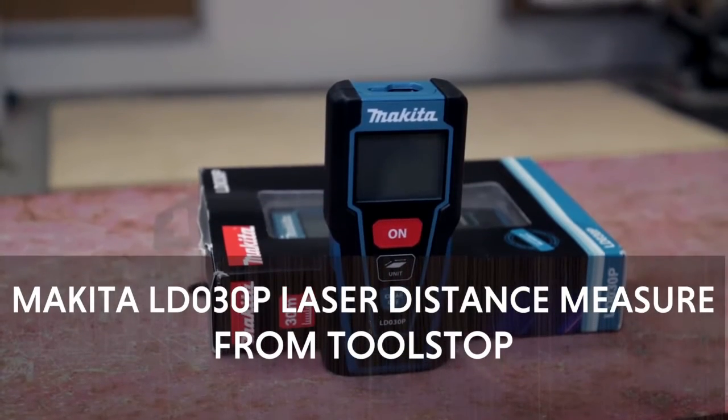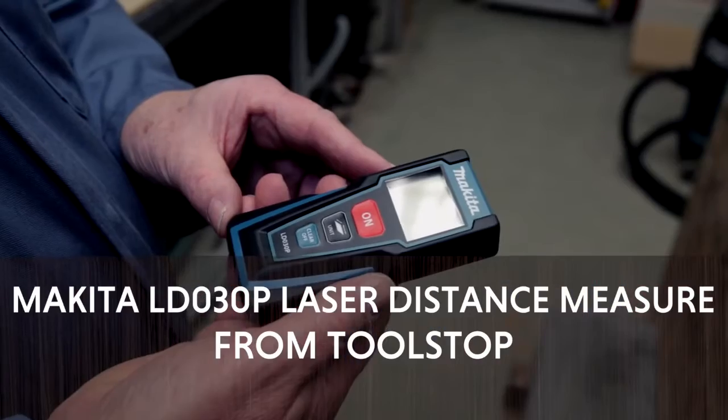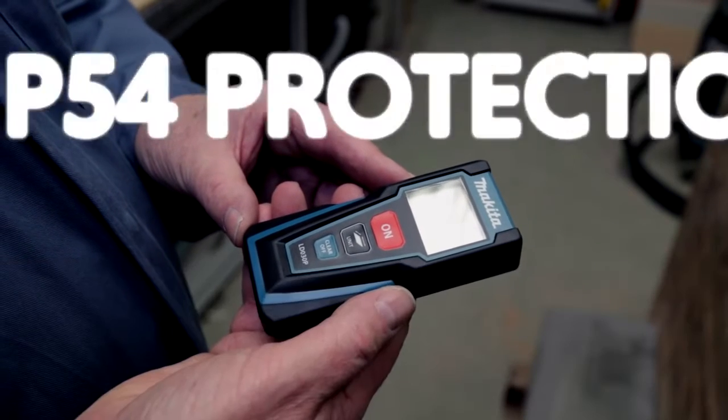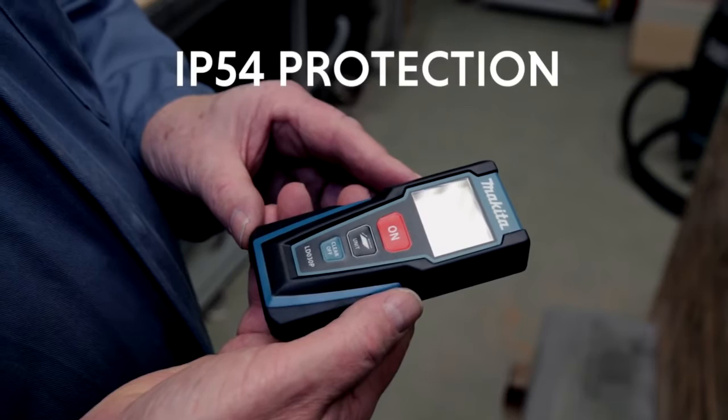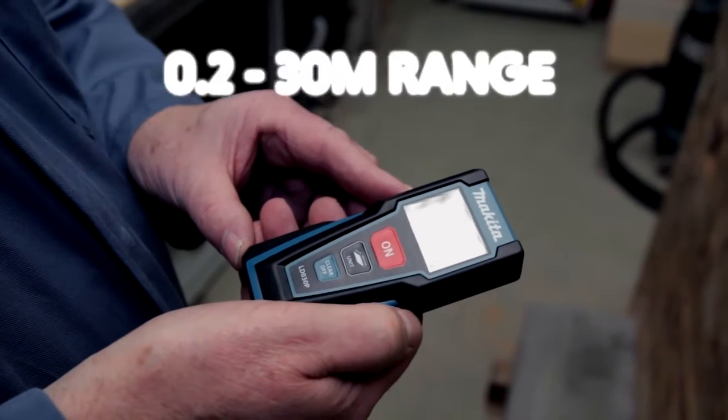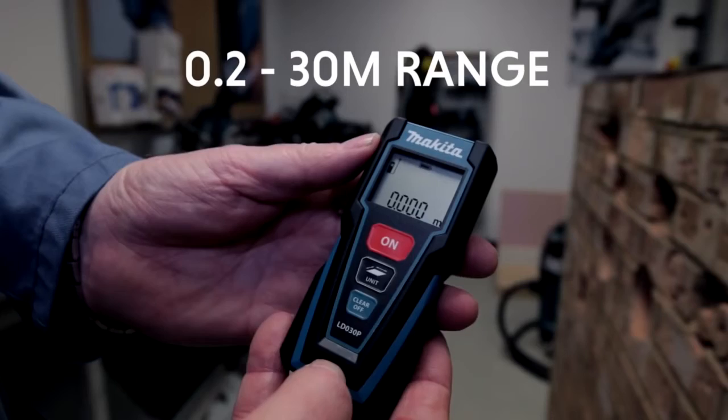Ray Wilby at Makita showing the features and benefits of the LD030P, which is a laser distance measure. It's a basic unit that can measure distance. You press it on, you point, and press.